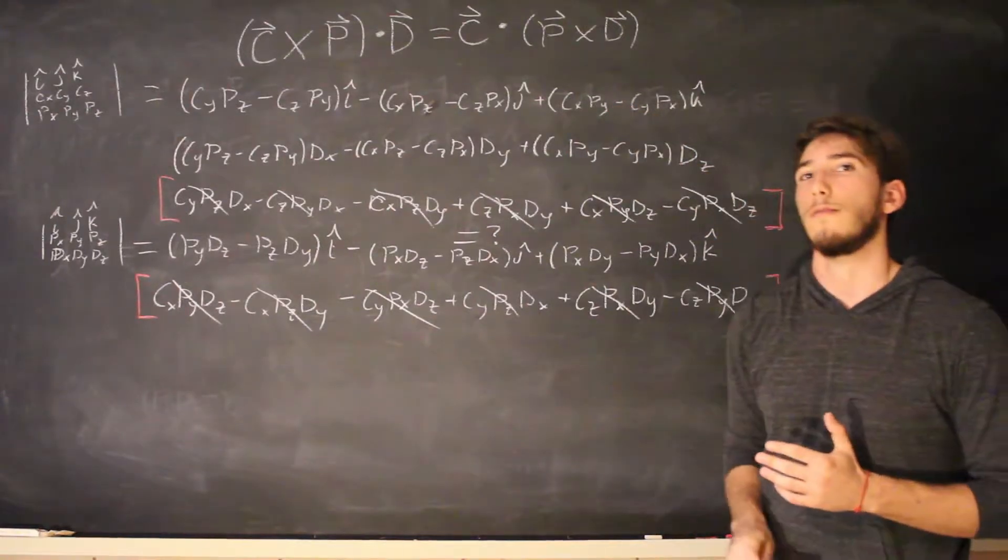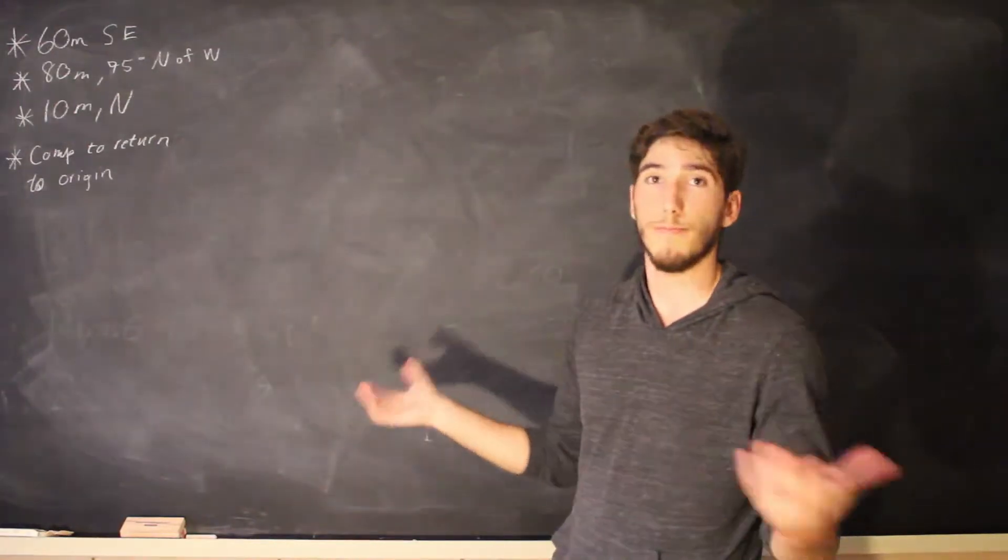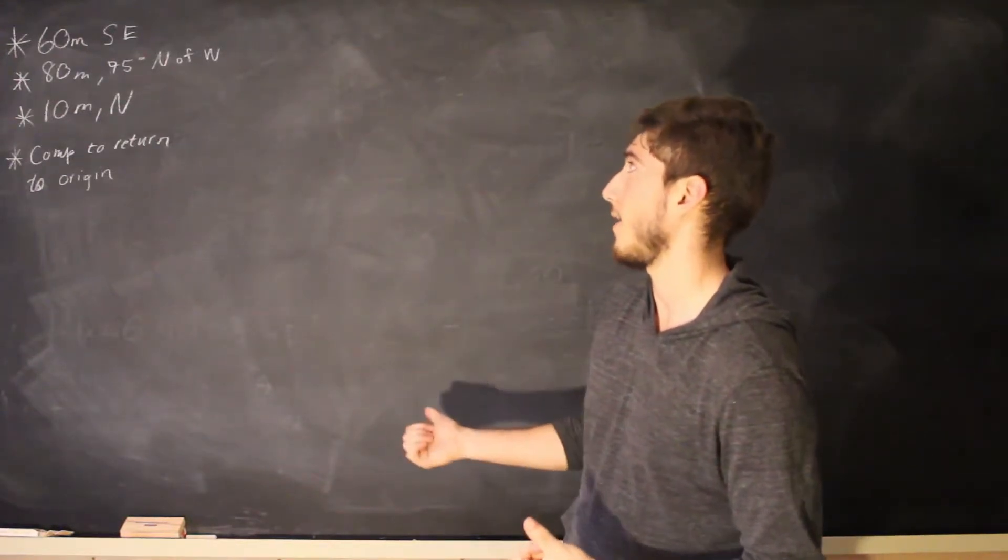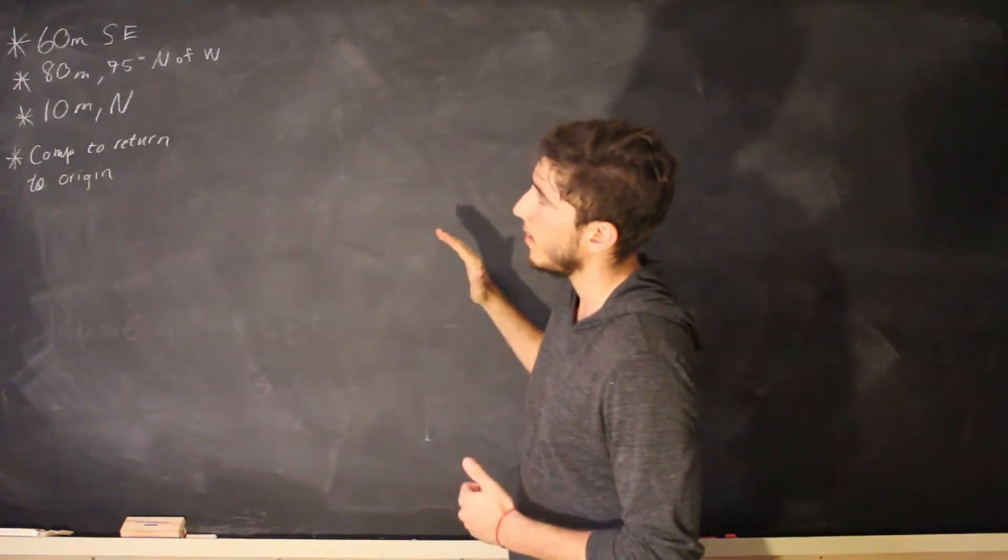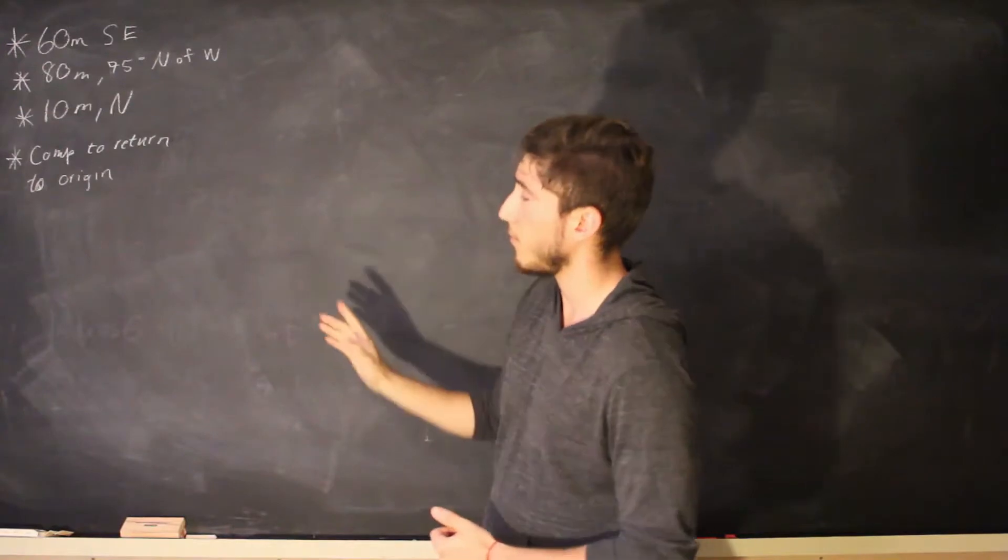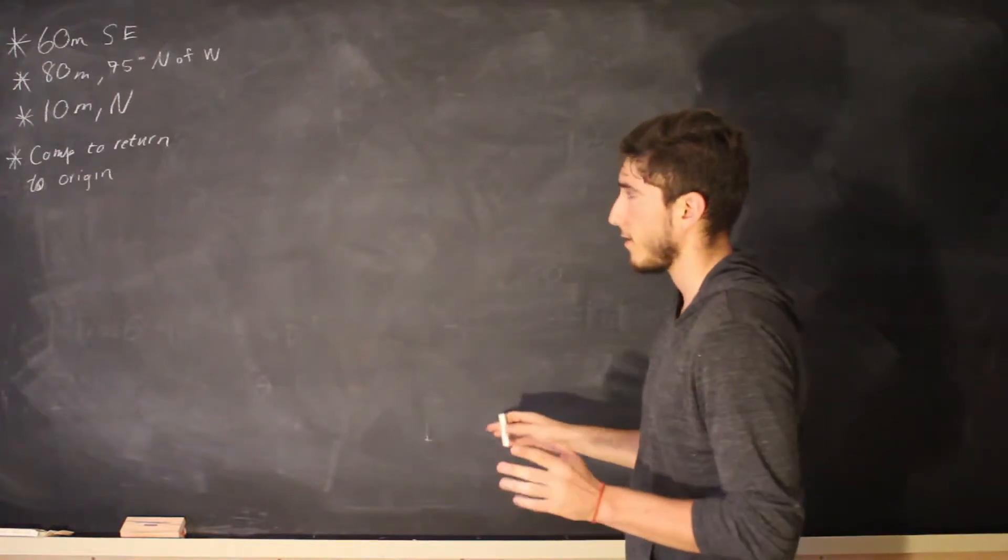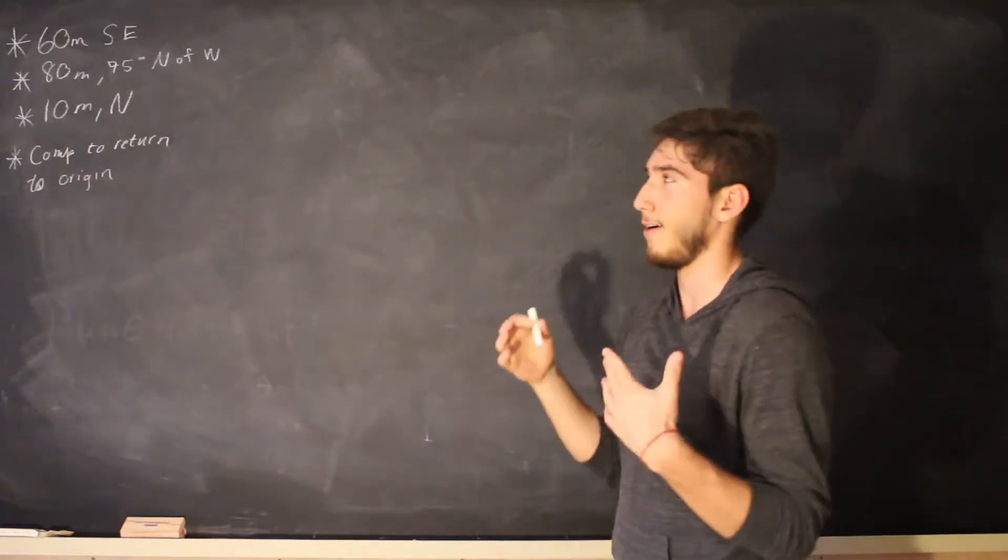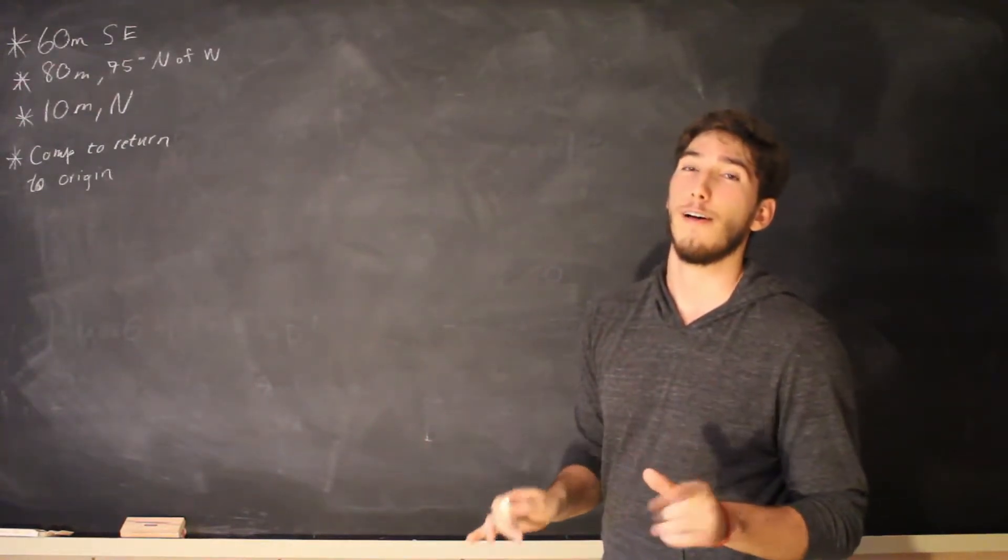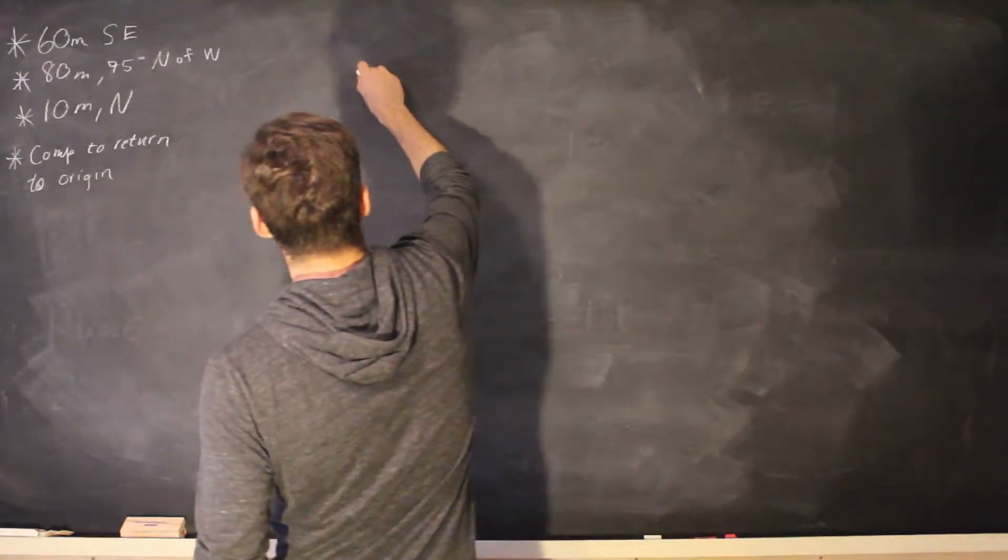on to the next example okay so in our next problem we have a buddy of ours and he's lost in the woods he started from the campsite and then he traveled 60 meters southeast 80 meters 75 degrees north of west and then 10 meters directly north all right let's draw this out first graphically excuse me ahead of time it might not be to scale and we might get like a super weird graphic but the important thing is that the components should be correct